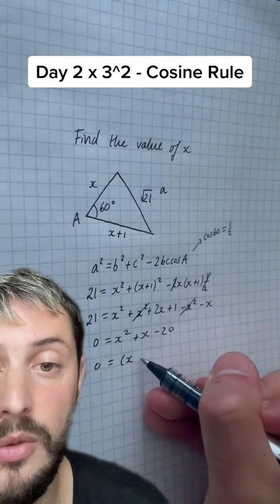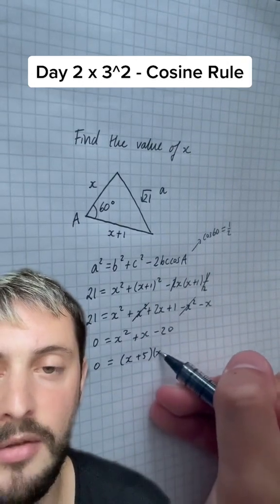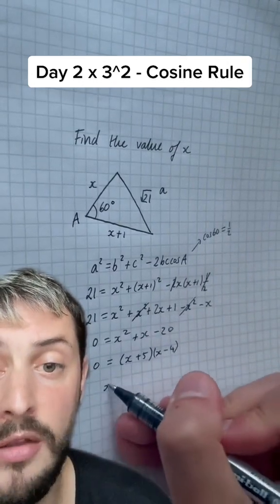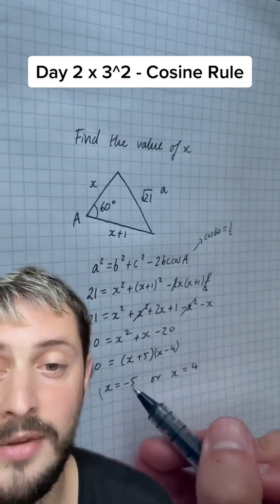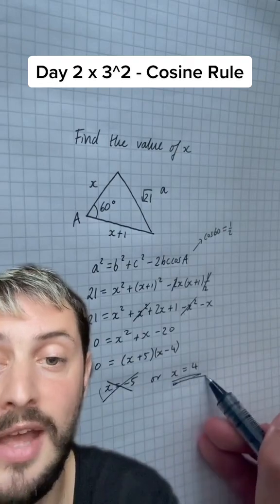This is going to neatly factorise to x plus 5 brackets x minus 4, meaning the solutions are that x equals minus 5 or x equals 4. But it makes no sense to have a negative length, so the only solution is x equals 4.